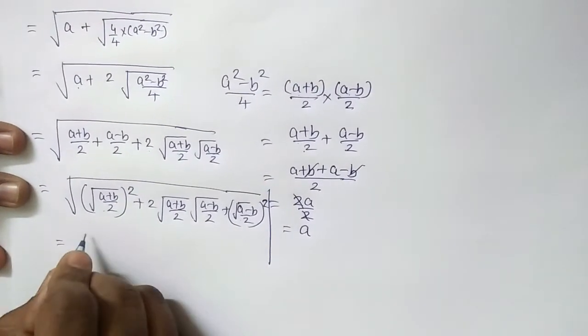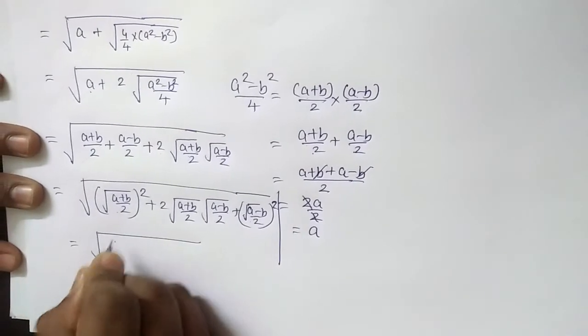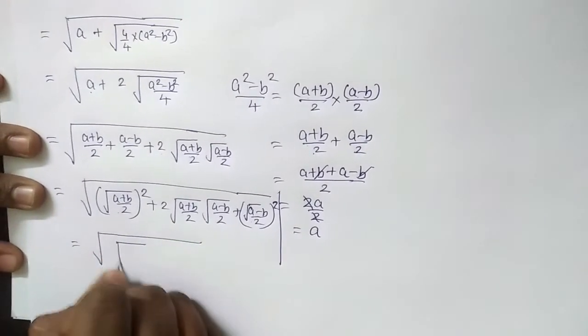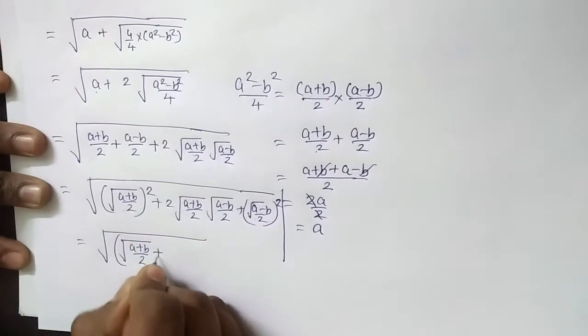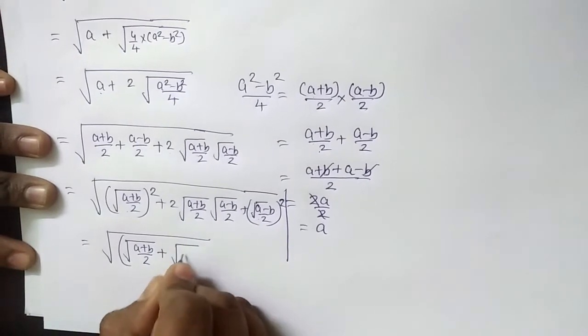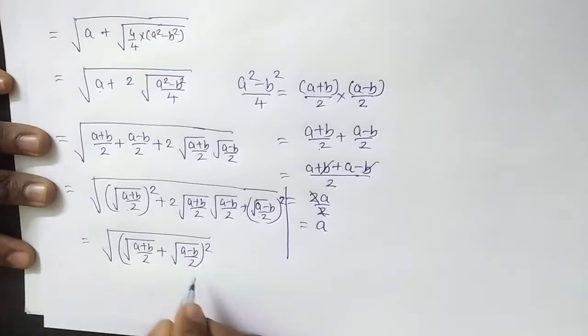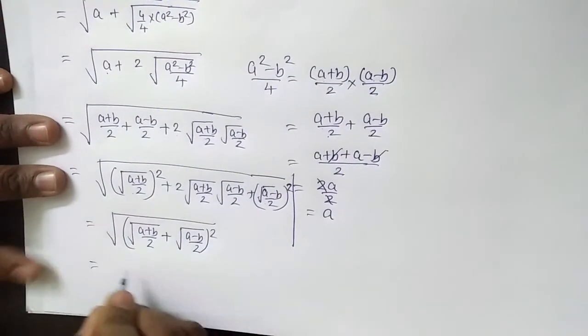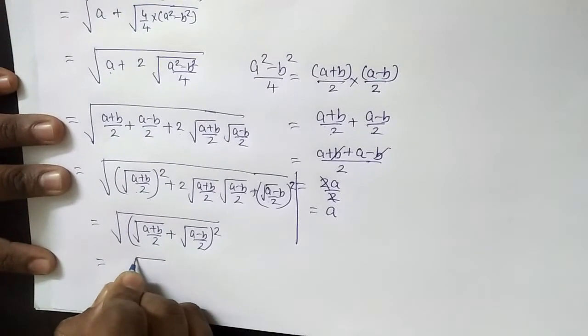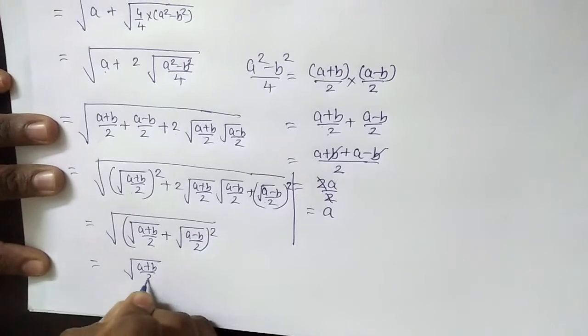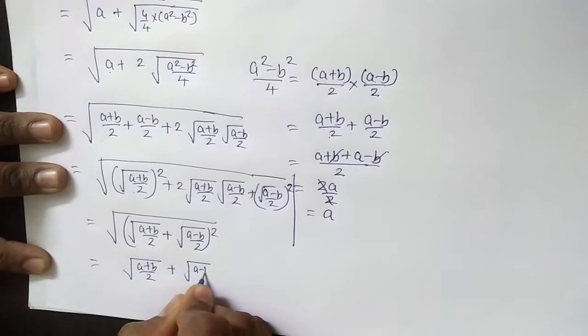So I should take it, that is under root of a plus b by 2. Here I will take sine plus under root of a minus b by 2 and its whole square. Square and square root will nullify each other and the ultimate answer will be root a plus b by 2 plus root a minus b by 2.